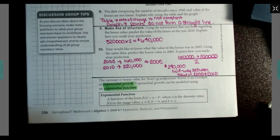The increase in house value for Tony's grandparents' house is an example of exponential growth. Exponential growth can be modeled using an exponential function.